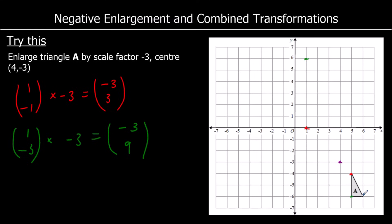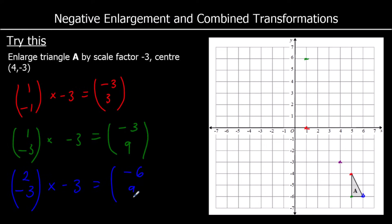And I have a blue point: right 2, down 3 — so the vector (2, -3) is how far you have to go from the centre of enlargement to the blue corner. If I multiply that by negative 3, I'll get negative 6, positive 9. So I want to go back 6, up 9.